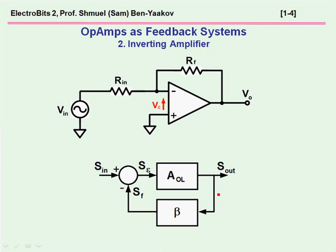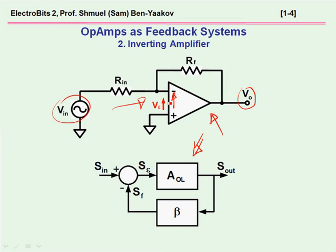However, in some cases this doesn't work. Let's look, for example, at the case of the inverting amplifier. If we attempt to apply the feedback model to this amplifier, something is missing. What is missing is that in this amplifier, when the output is zero, we see that there is a sort of voltage divider here — the input is fed and actually attenuated when it reaches the input terminals of the amplifier.